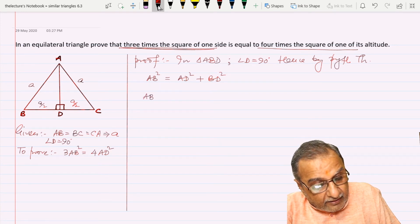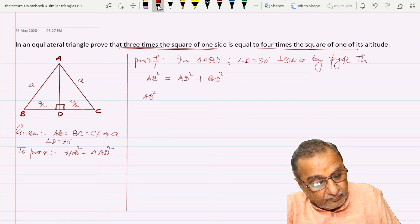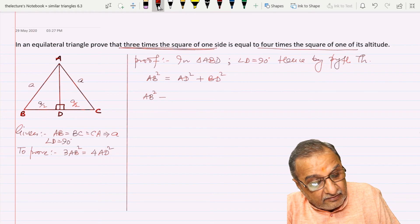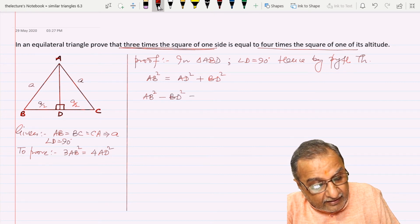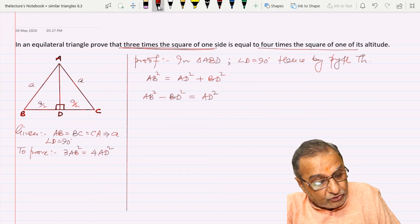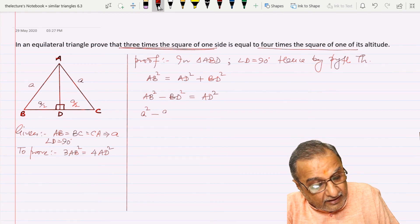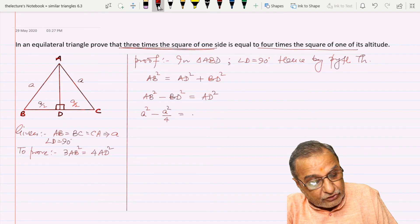So AB squared minus BD squared equals AD squared. AB is A, so A squared minus A squared upon 4 equals AD squared.